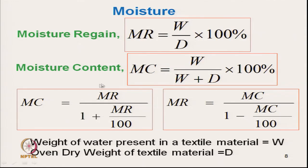The relationship between moisture content and moisture regain: if we know moisture regain, we can convert it to moisture content by the formula: Moisture Content = Moisture Regain / (1 + Moisture Regain/100). Similarly, moisture regain can be calculated from moisture content by: Moisture Regain = Moisture Content / (1 − Moisture Content/100).